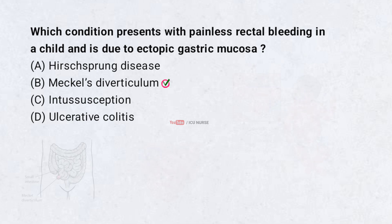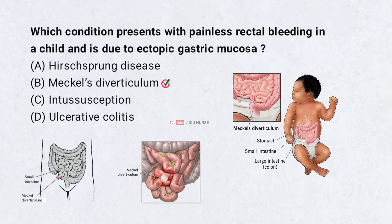Meckel's diverticulum is a small pouch in the small intestine that some babies are born with. It is a leftover part from the baby's development in the womb. Sometimes this pouch has stomach-like cells that make acid, which can cause sores and bleeding in the intestine. It usually shows up as painless blood in the stool, and surgery may be needed if it causes problems.